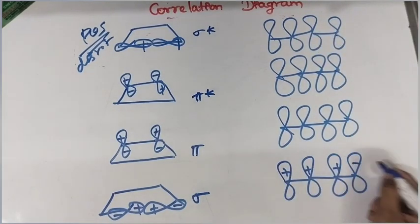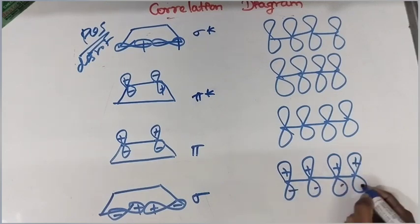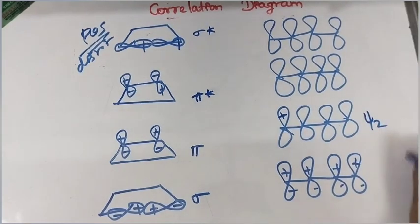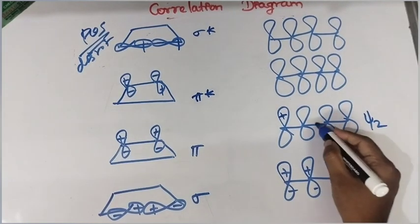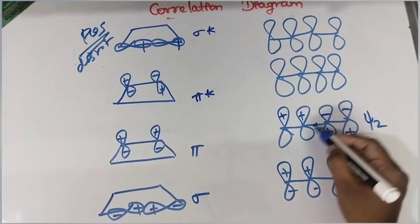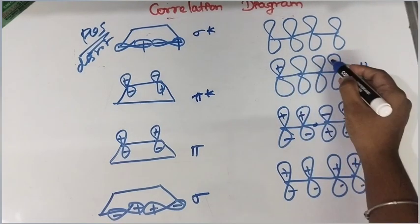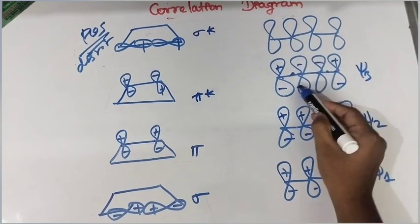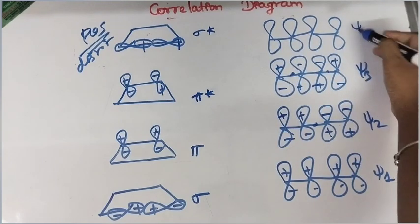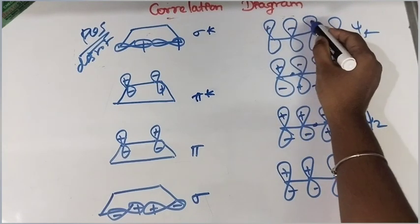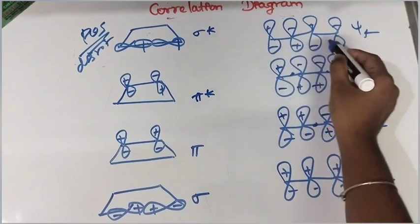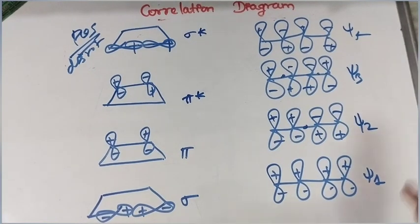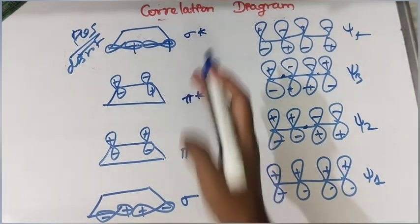On the butadiene side, draw psi1 through psi4. Psi1 has 0 nodes — all same sign. Psi2 has 1 node — even, so it has C2 symmetry; terminal lobes have opposite signs. Psi3 has 2 nodes — odd, so plane of symmetry; terminal lobes same sign: minus/minus/plus/plus. Psi4 has 3 nodes — even; plus/minus/plus/minus on top, minus/plus/minus/plus on bottom.